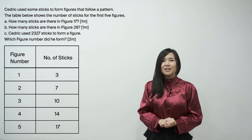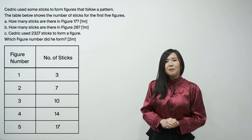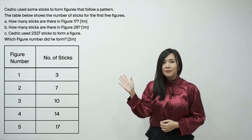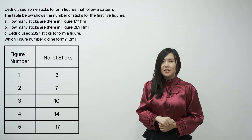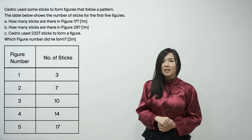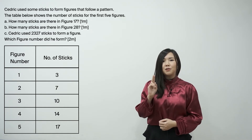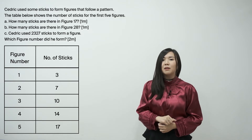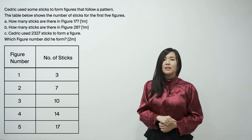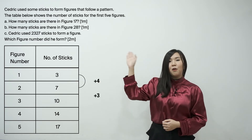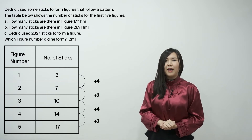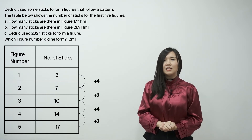Cedric used some sticks to form figures that follow a pattern. The table below shows the number of sticks for the first five figures. Part A: How many sticks are there in figure 17? Part B: How many sticks are there in figure 28? Part C: Cedric used 2327 sticks to form a figure — which figure number did he form? We see that the number of sticks follow this pattern of plus 4, plus 3, plus 4, plus 3, which we identify as a constant difference at alternate intervals.